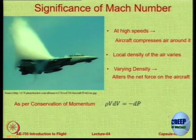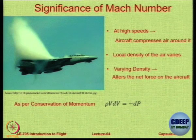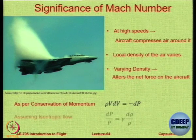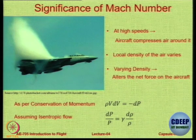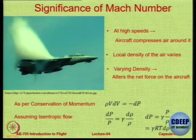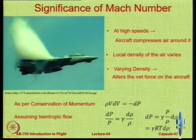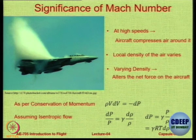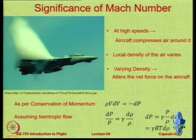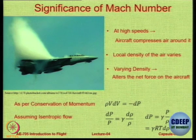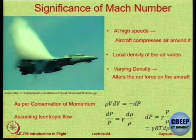If you apply conservation of momentum, it can be shown that ρV dV equals minus dP, the minus sign showing that if velocity increases, pressure decreases and vice versa. Similarly, assuming isentropic flow, the relationship γ dP/ρ is valid. Using these two quantities, one can derive that dP equals γRT times dρ. Now γRT represents the speed of sound squared — A squared. And A is basically M times V.